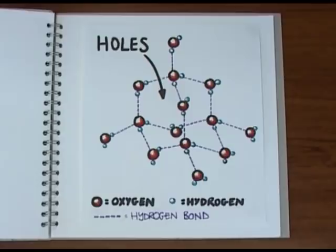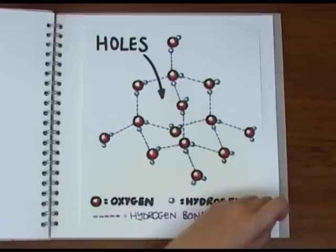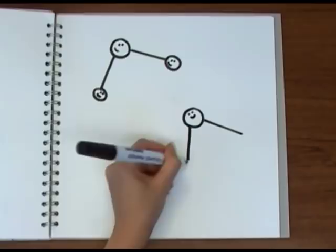When ice melts, the molecules gain energy and start jiggling around, constantly rearranging the hydrogen bonds, allowing the molecules to get closer together, making liquid water more dense.